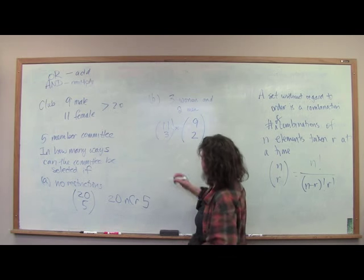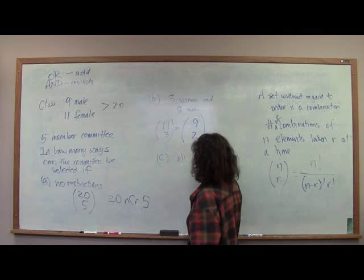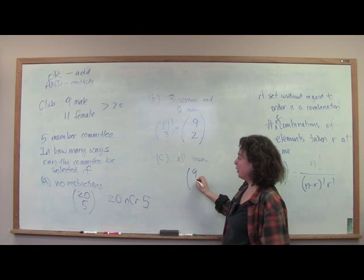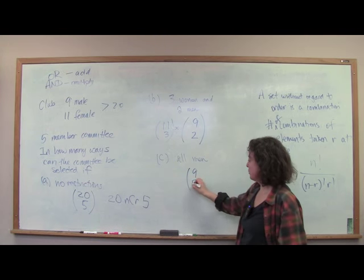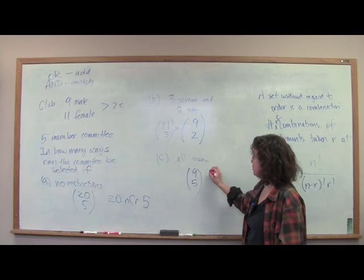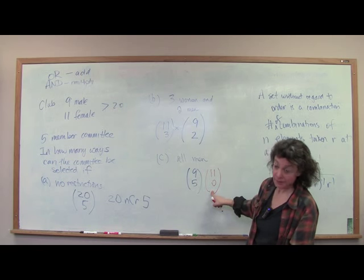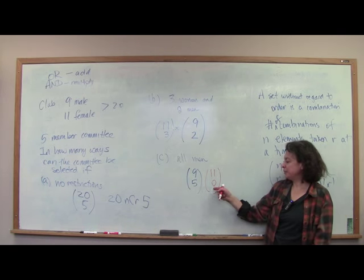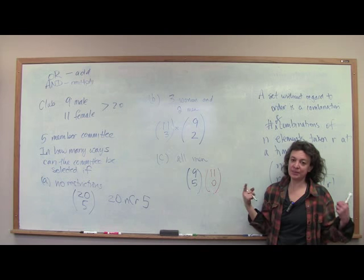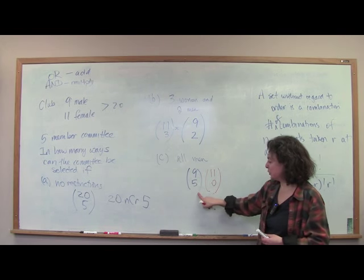What if we want all men? We have 9 men and want to choose 5, so it's 9 choose 5. You could also note 11 choose 0 for the women, since we're choosing zero women — but anything choose zero equals 1 (there's only one way to choose nobody). So the blue 9 choose 5 alone is sufficient.